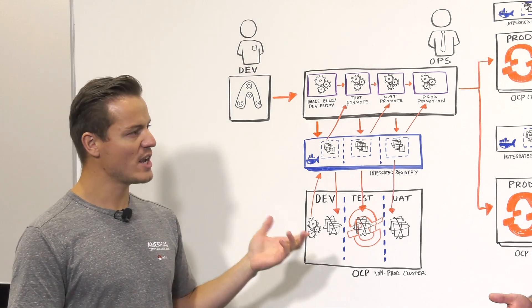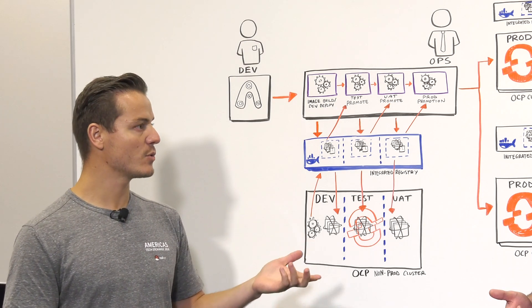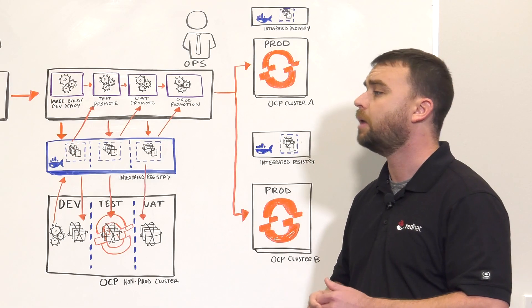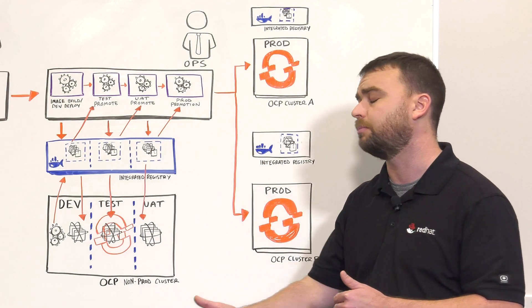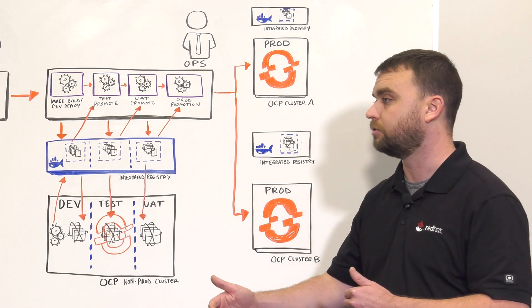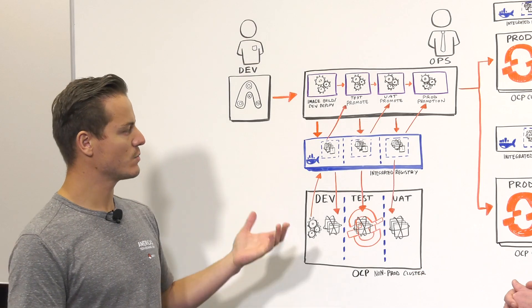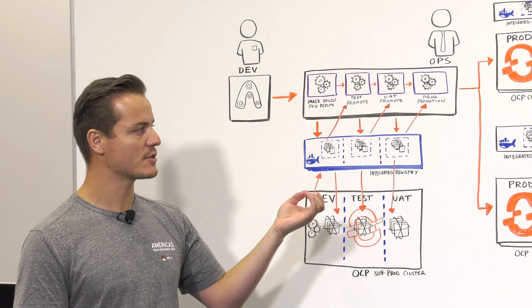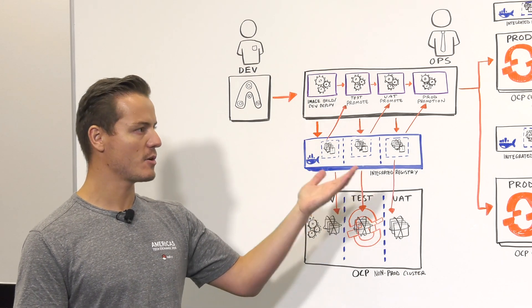So would you say that the process changes at all using Quay instead of our integrated registry? The process is very similar, minus the need to necessarily copy that image to the different registries. So what you're saying is we can use Quay, store our images there, and then just pull from that repository and deploy those images in our production clusters. Correct. And appropriately tag those images so we know where and which project that should be deployed in.